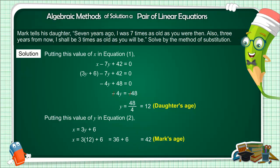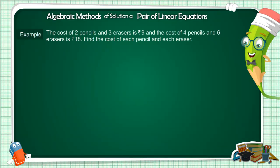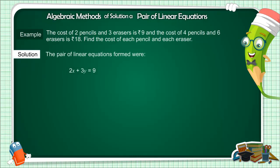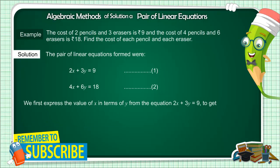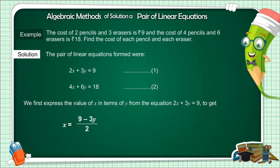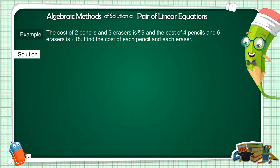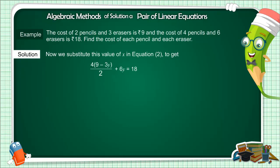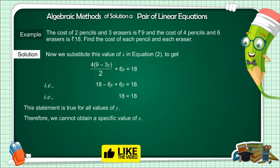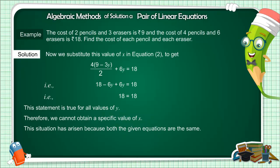Let us see a last example which we also saw in the graphical method. The cost of 2 pencils and 3 erasers is 9 rupees, and the cost of 4 pencils and 6 erasers is 18 rupees. Equations are: 2x plus 3y equals 9, and 4x plus 6y equals 18. From the first equation, x equals (9 minus 3y) by 2. Substituting this into the second equation gives 18 on both sides — the value of y cannot be determined. This is because both equations are the same; if you divide the second equation by 2, you get the first. This means they have infinite solutions.